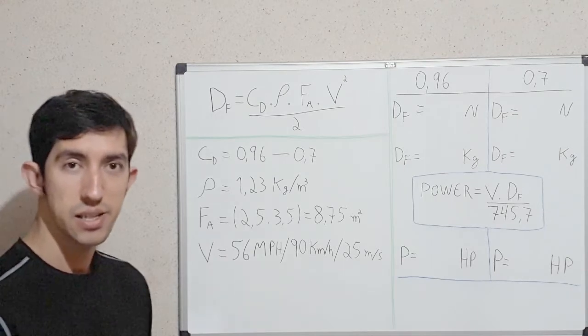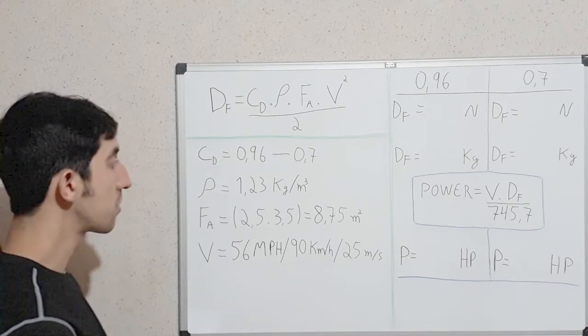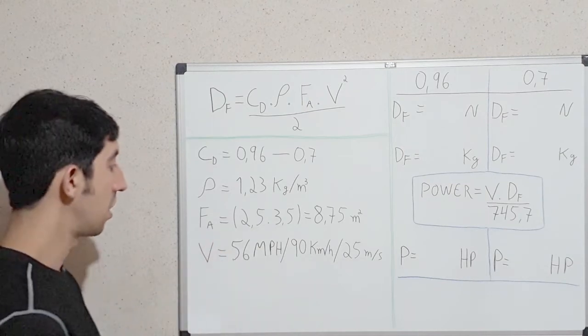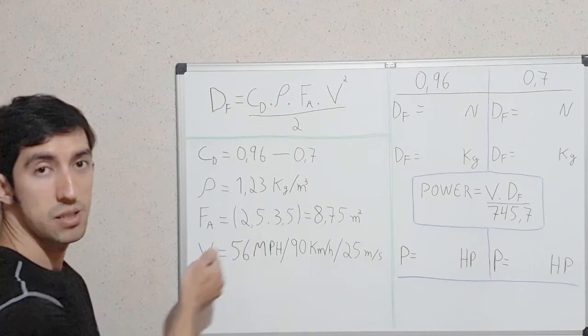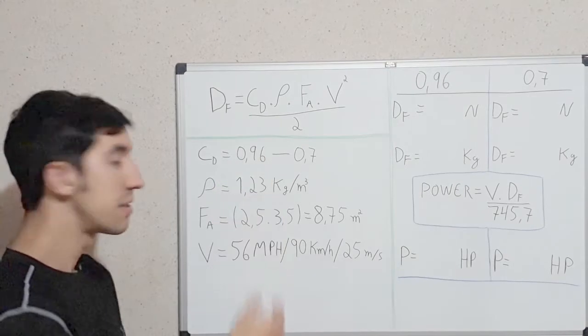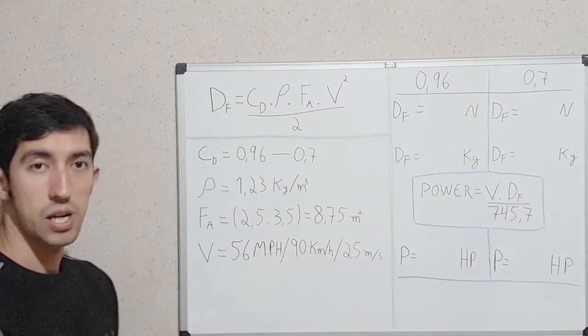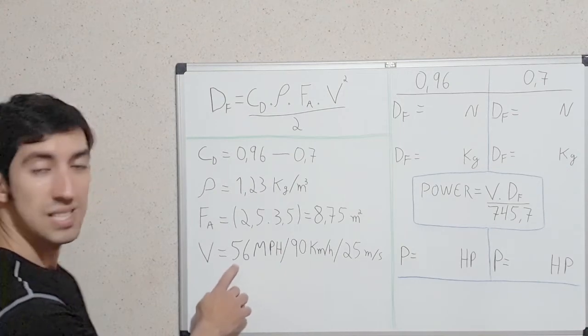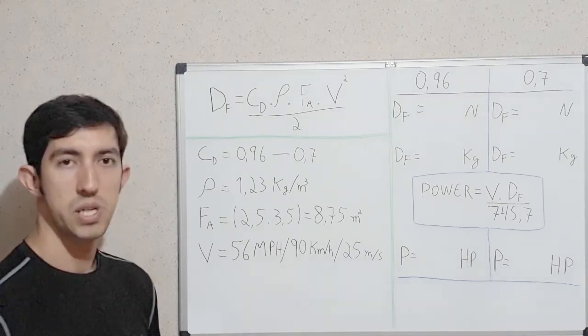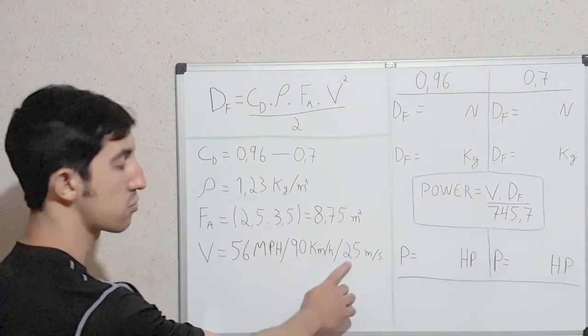Next, the air density at 15 degrees at sea level is 1.23 kilograms by cubic meters. This frontal area of the truck is an estimative of 2.5 meters wide by 3.5 meters in height, so 8.75 meters squared. The velocity of the truck, I'm going to be using 56 miles per hour or 90 kilometers per hour. But to put in this formula needs to be in meters per second, so it's 25 meters per second.